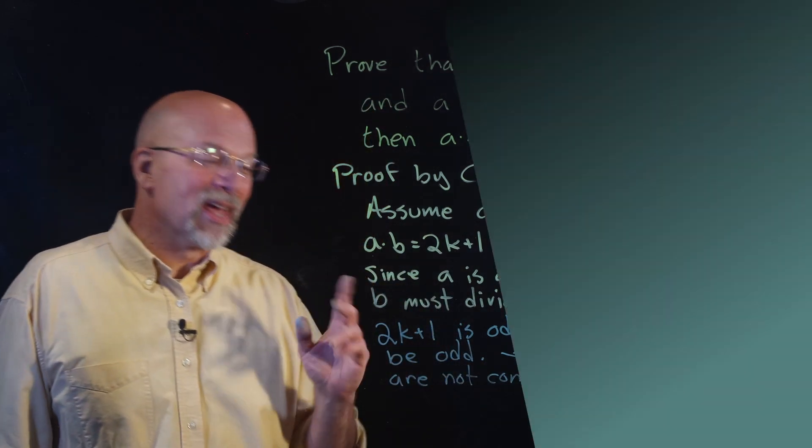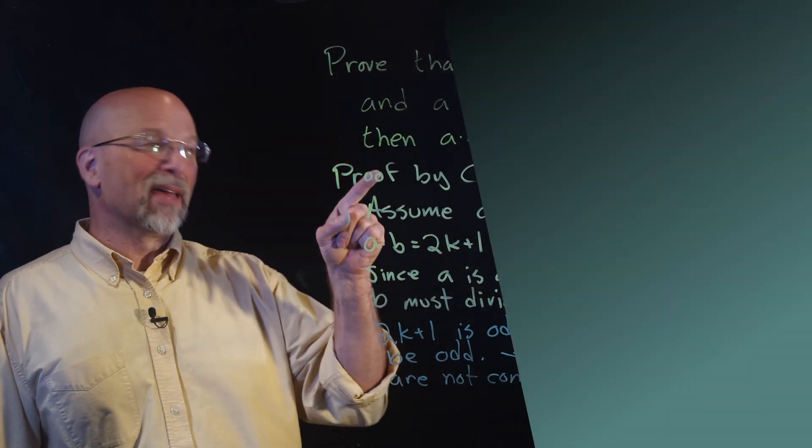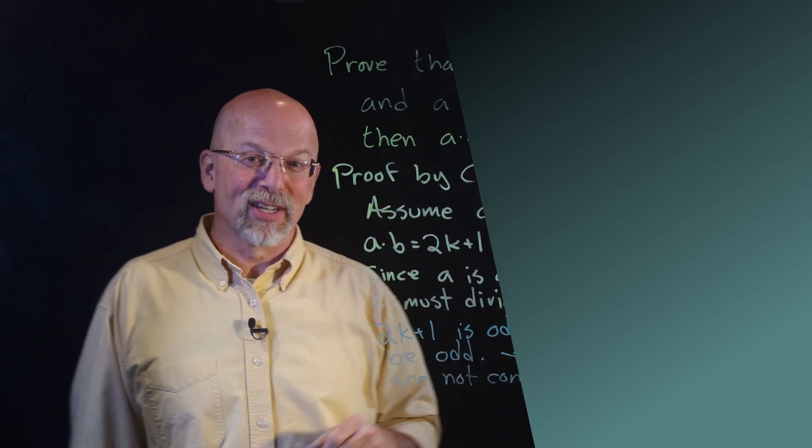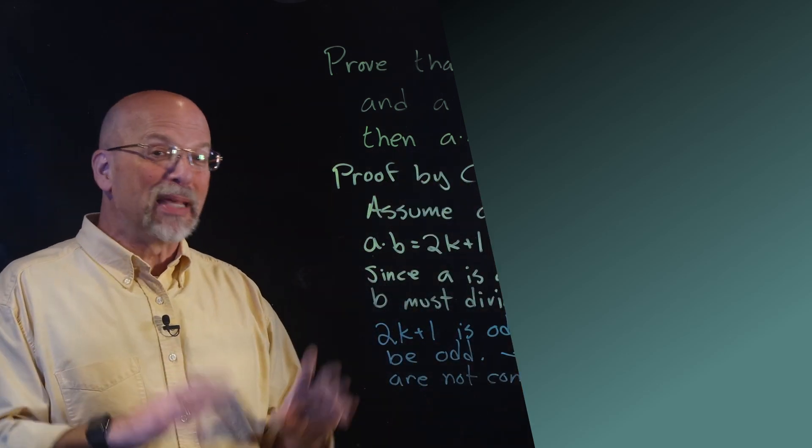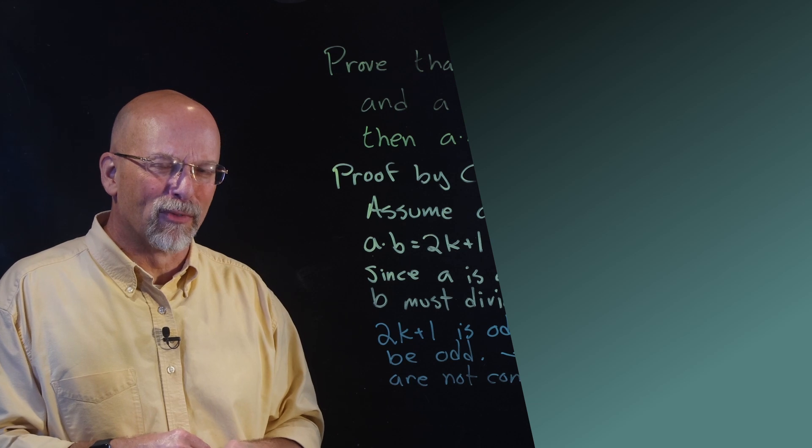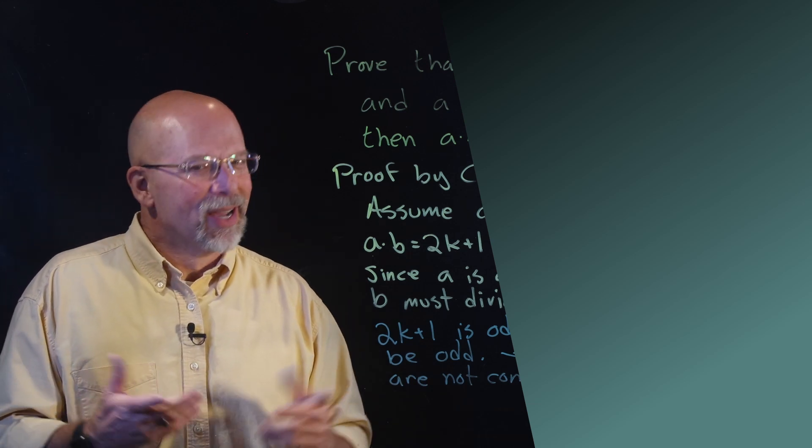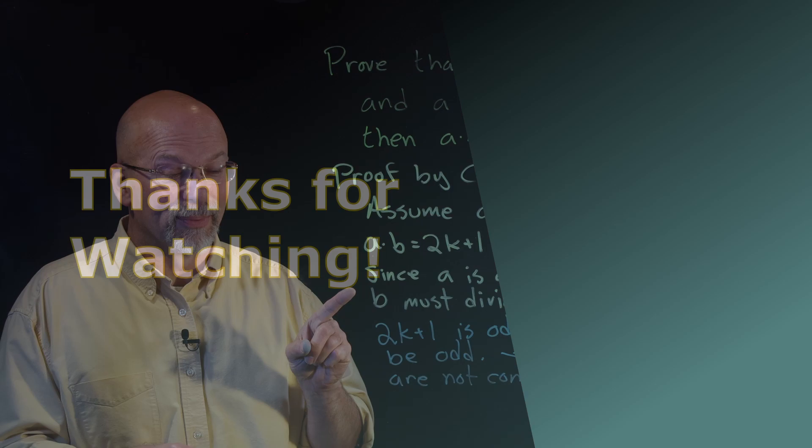So, there you have it. We have really proved that if a and b are consecutive, positive integers, then a times b is even. We've done it a number of ways. This just goes to show that there's more than one way to get from here to Chicago.